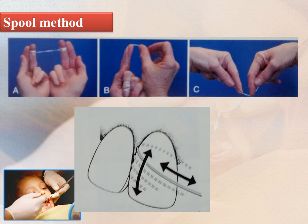Then move the floss across the interdental gingiva and repeat the procedure on the proximal surface of the adjacent tooth. Continue through the whole dentition, including the distal surface of the last tooth in each quadrant. When the working portion of the floss becomes soiled or begins to shed, move to a fresh portion of floss.